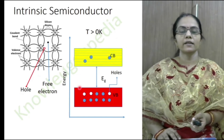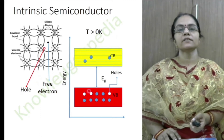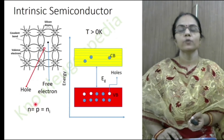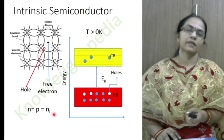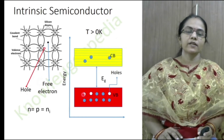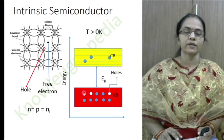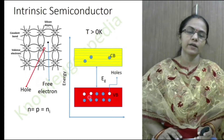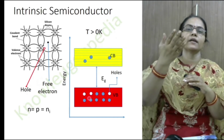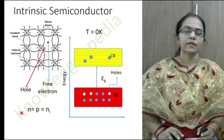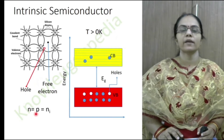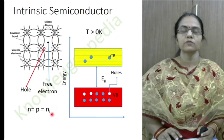These electrons and holes are known as charge carriers in semiconductors. In an intrinsic semiconductor, for each electron moving from valence band to conduction band, one hole is created. Therefore, the number of electrons in the conduction band equals the number of holes in the valence band. This equal concentration is known as the intrinsic carrier concentration, denoted by Ni.